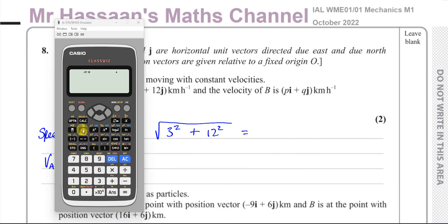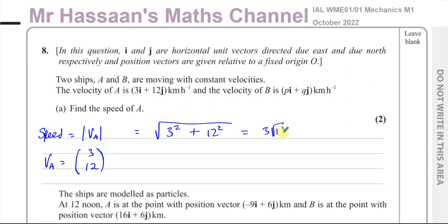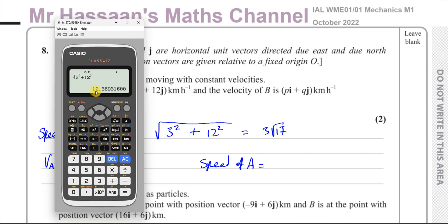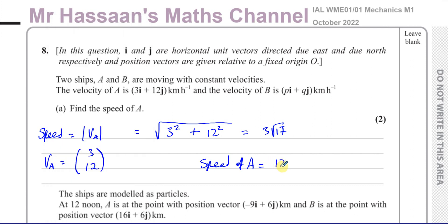So you have the square root of 3 squared, which is 9, plus 12 squared, which is 144. That gives us 3 times root 17, and therefore the speed of A, rounded to 3 significant figures, is 12.4 kilometres per hour. That's the answer to part A — the speed is the magnitude of the velocity.